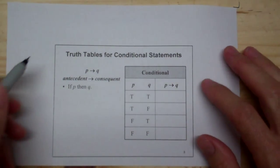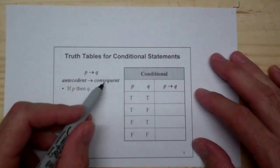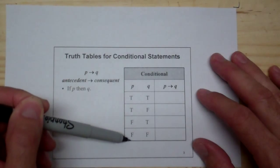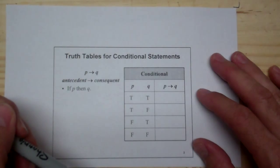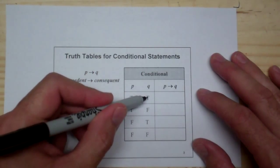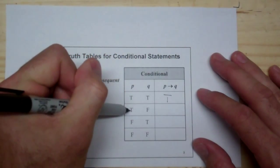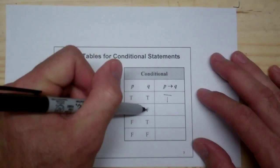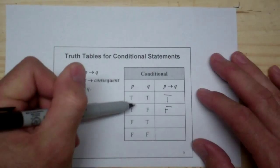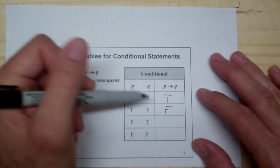We want to use the antecedent and the consequent to create our truth table. We'll fill this in just like normal: true, true, false, false for the first variable and true, false, true, false for the second. If true leads to true, that's a true conditional statement. If true leads to false, that's a false conditional statement — if you did what you were supposed to do and did not get the expected result, that's false.